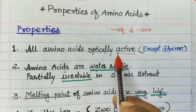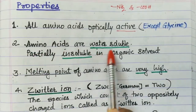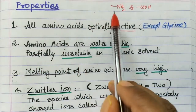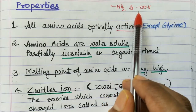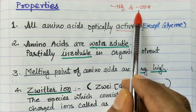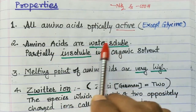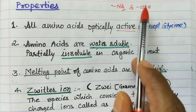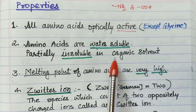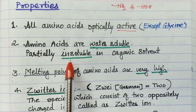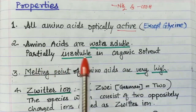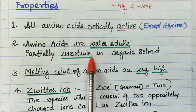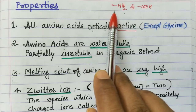Second property: amino acids are water soluble and partially insoluble in organic solvents. Long chain amines and carboxylic acids are mostly water insoluble, but amino acids are water soluble. Long chain amines and carboxylic acids are soluble in organic solvents, but amino acids are insoluble in organic solvents — showing the somewhat opposite property compared to long chain amines and carboxylic acids.